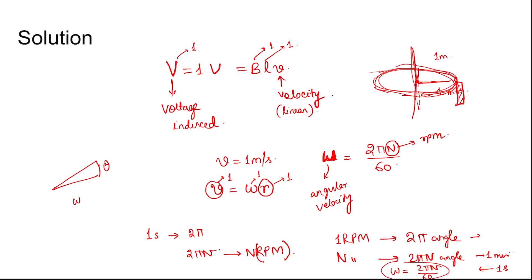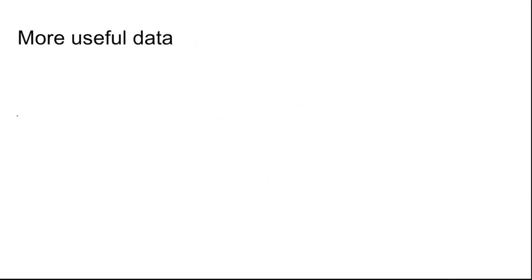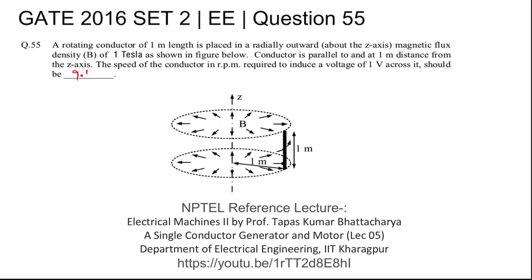Since omega equals 1 radian per second, we get N equals 60 divided by 2π, which equals 30 divided by pi. This gives N approximately equal to 9.549 RPM. So the disc must be rotated at 9.549 or 9.55 RPM in order to produce an EMF of 1 volt across this conductor.